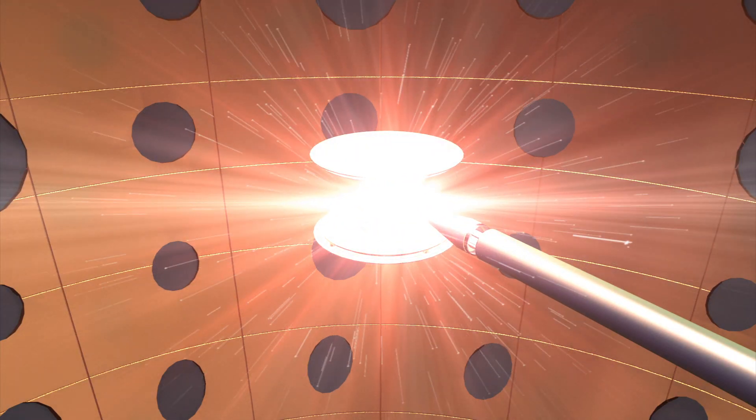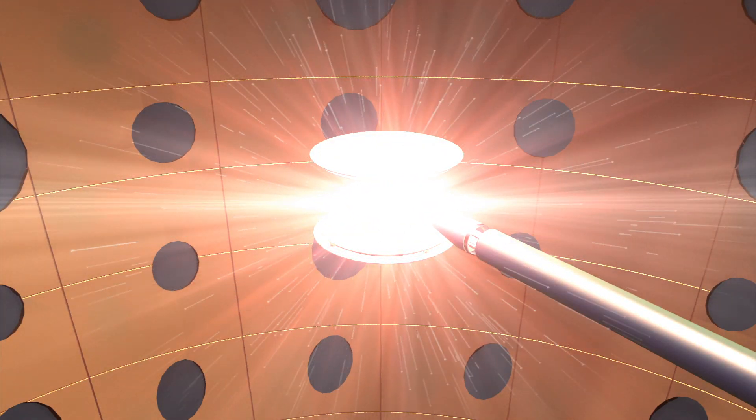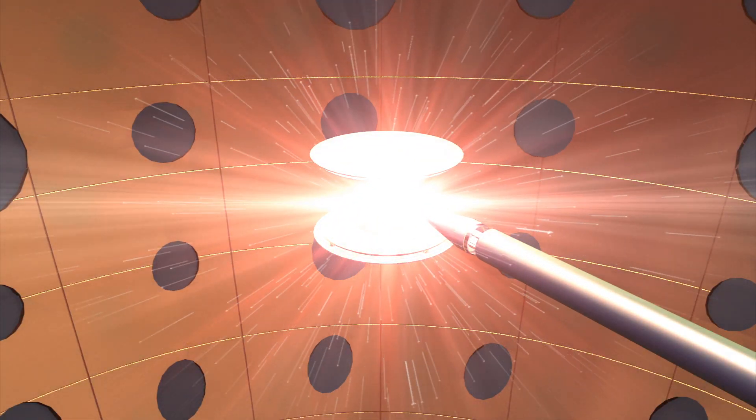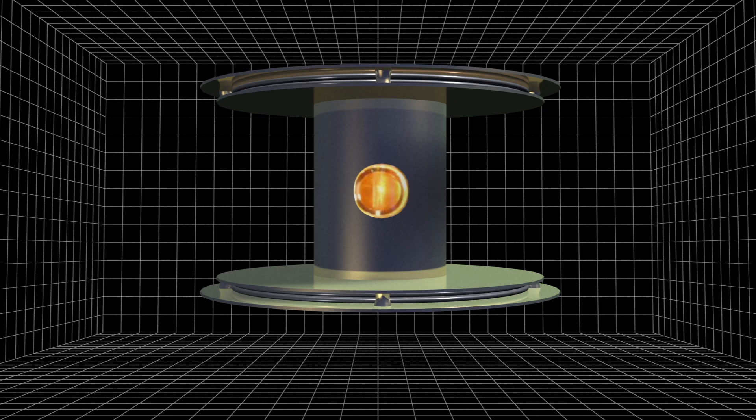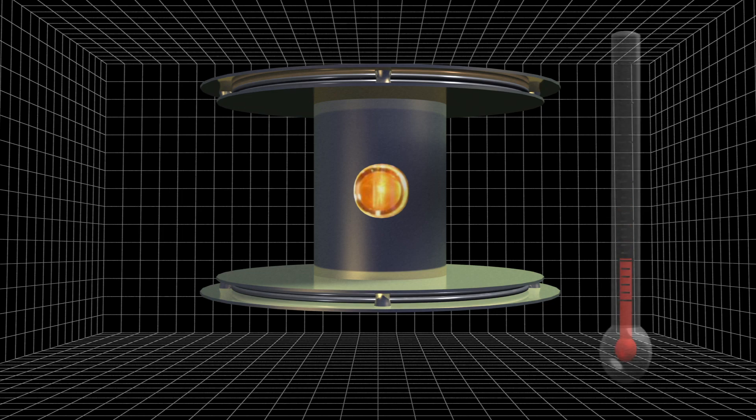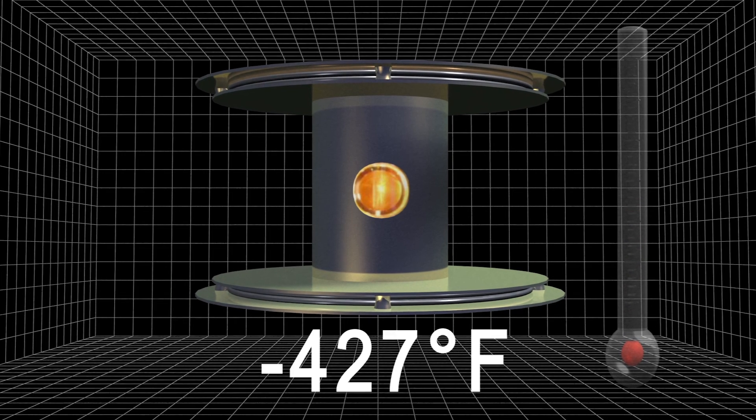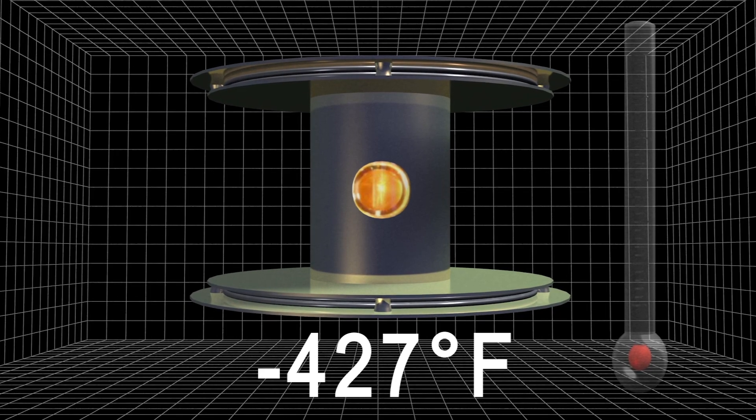The fusion process uses a fuel capsule placed inside a tiny gold case called a HORALM, which is bombarded by 192 laser beams. The temperature inside the HORALM is lowered to more than 400 degrees below zero Fahrenheit to facilitate the fusion reaction.